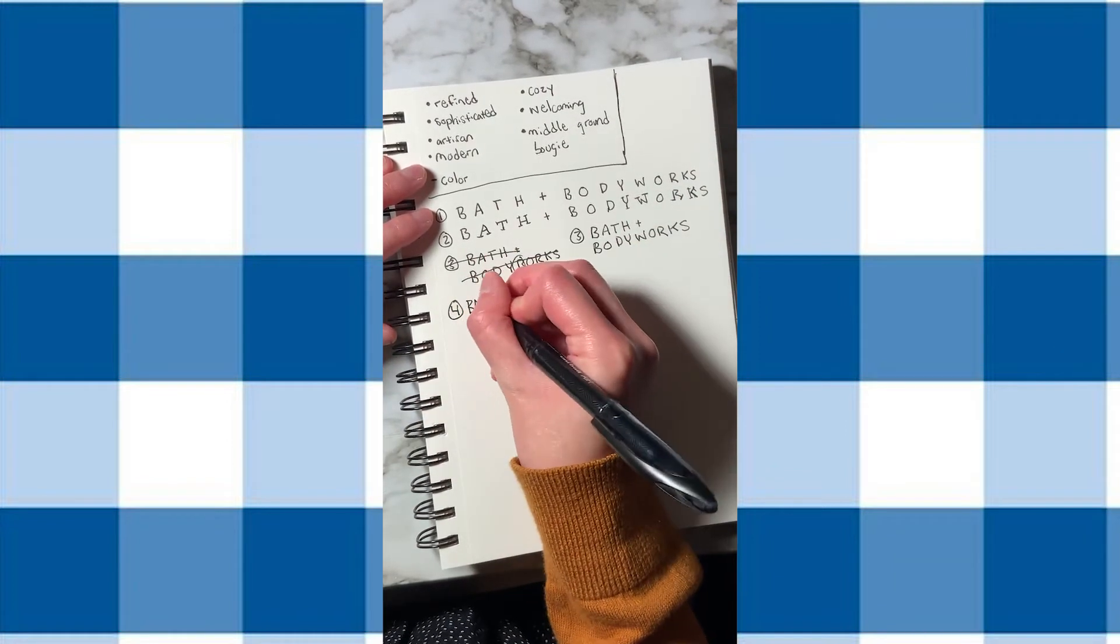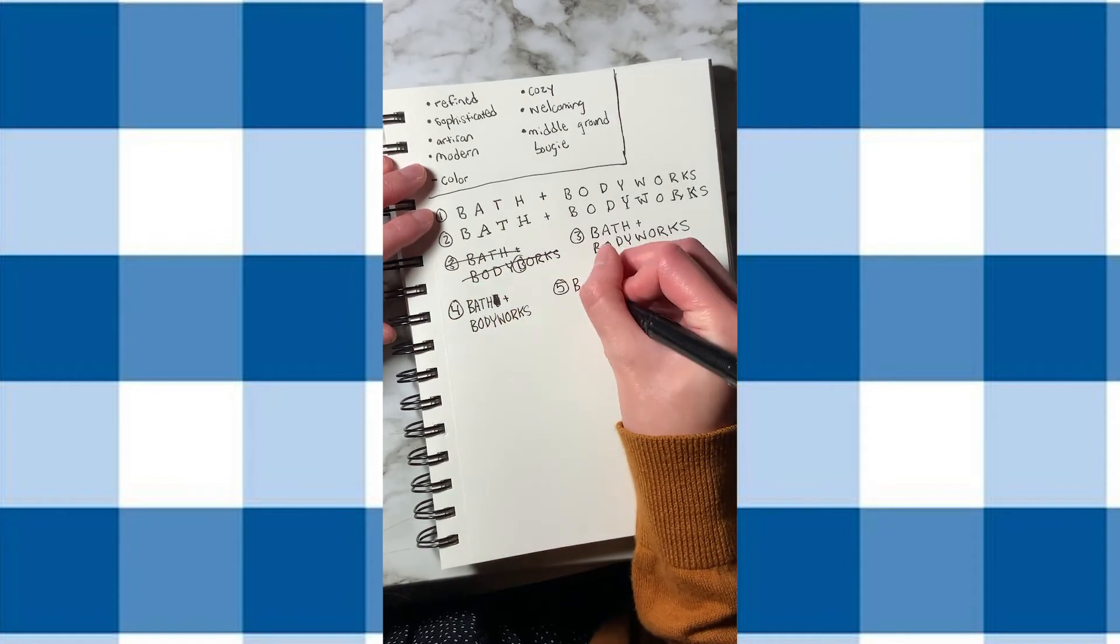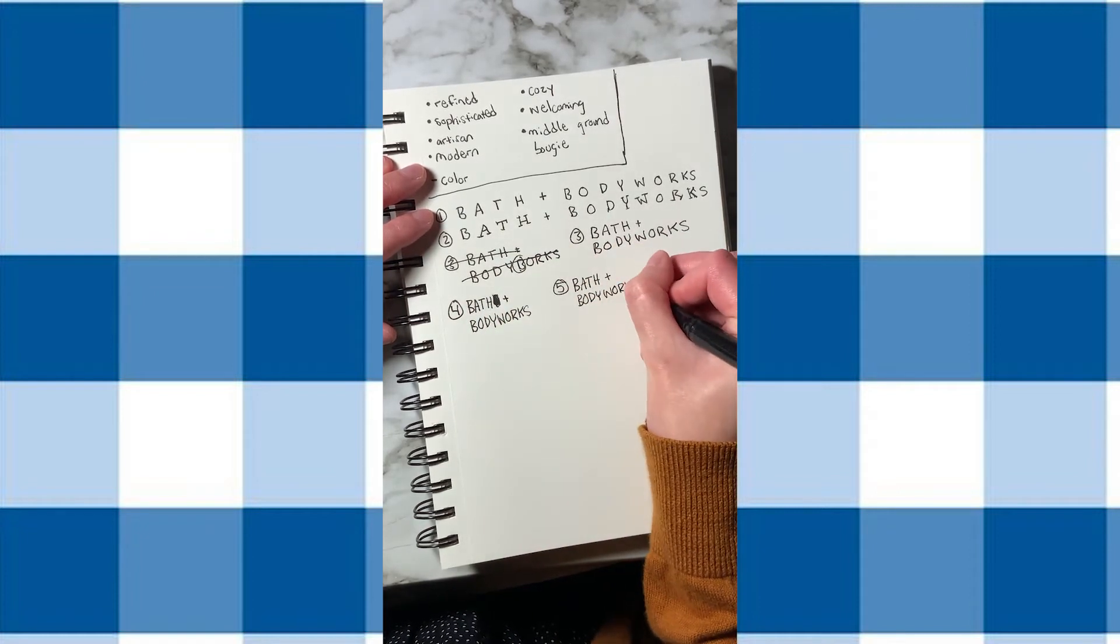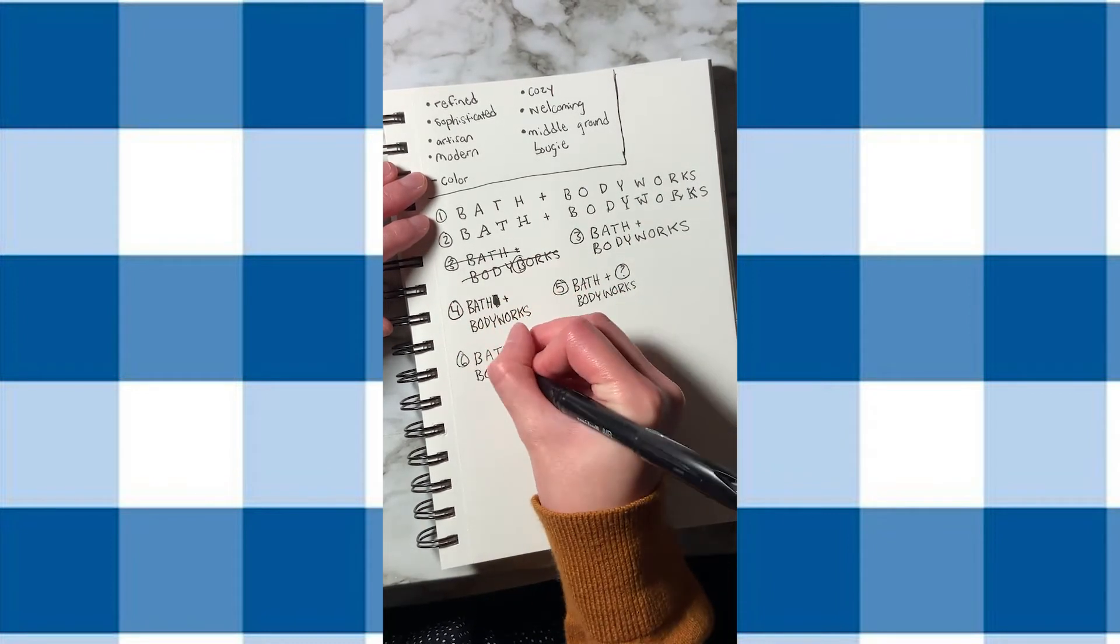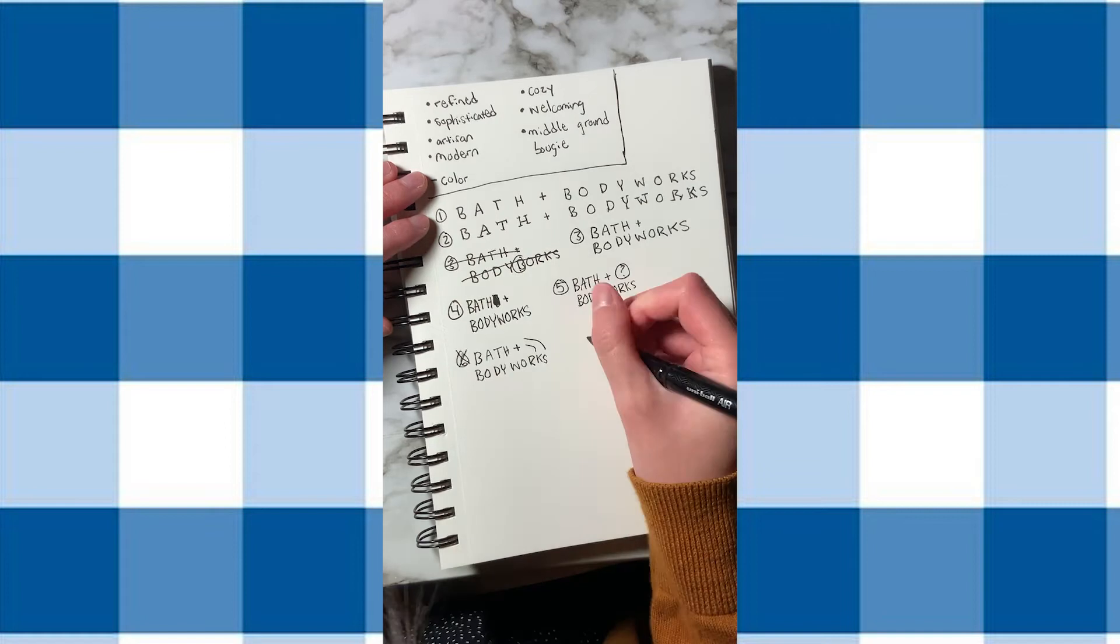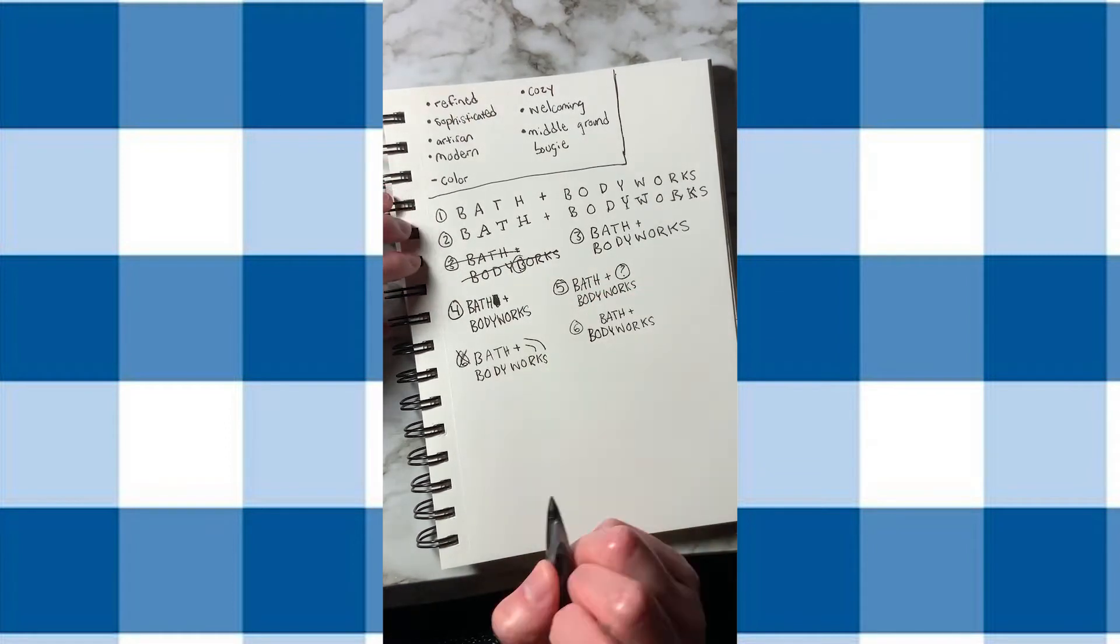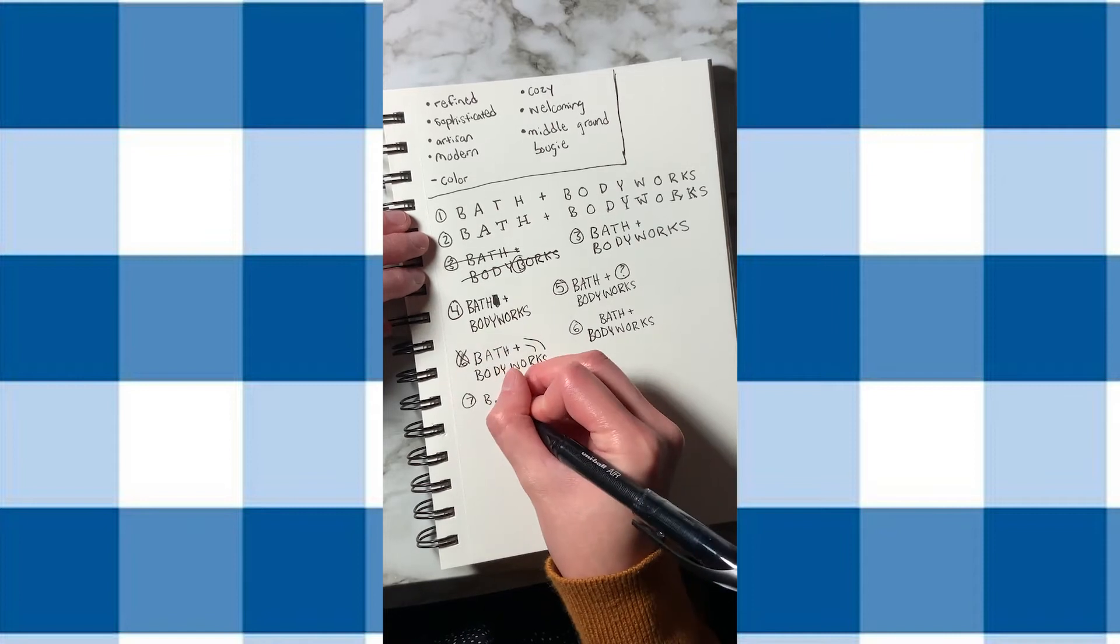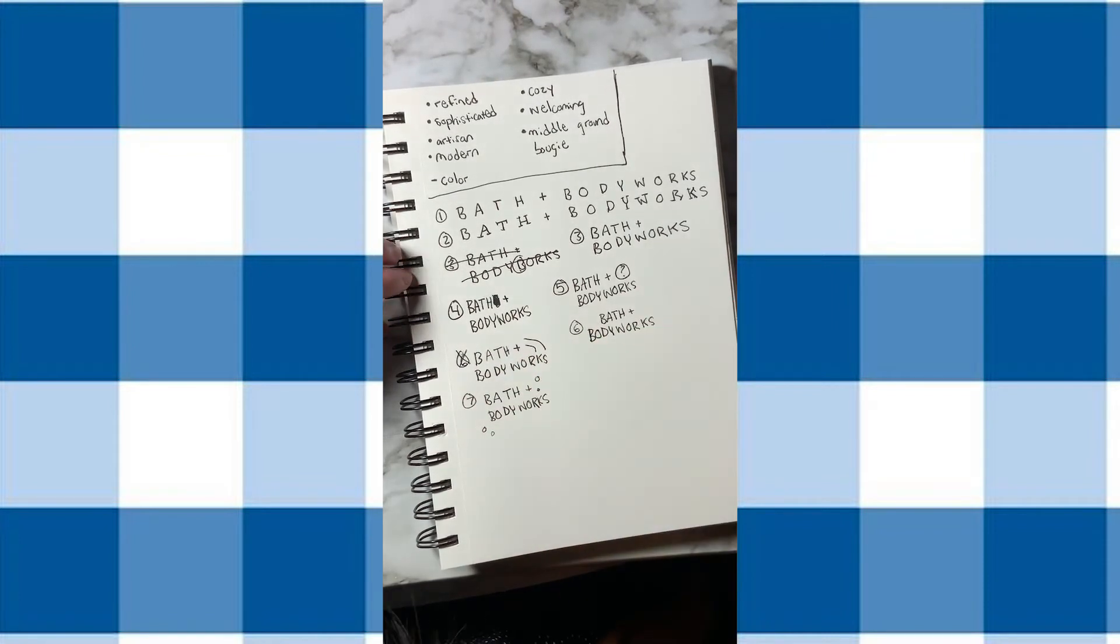So yeah, now I'm testing out different layouts that I can try out, like stacking the logo instead of having it straight across. And then I was thinking of maybe adding a little icon there on the corner. Or having it centered. Here I was thinking of bubbles, so I thought maybe that would have been a good motif, but I ended up not liking that at all.